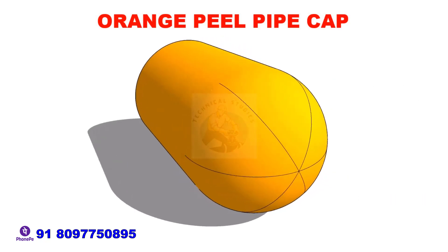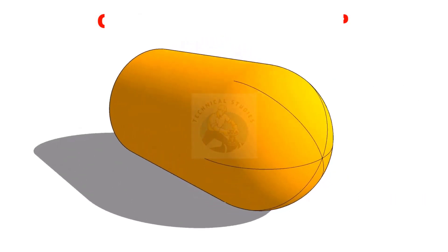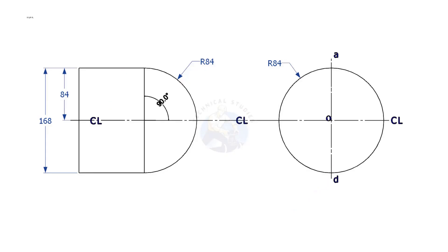In this video, we will learn how to lay out orange peel. This is a 6-inch pipe. Since the outer diameter of a 6-inch pipe is 168mm, draw the front view and side view of the cap.